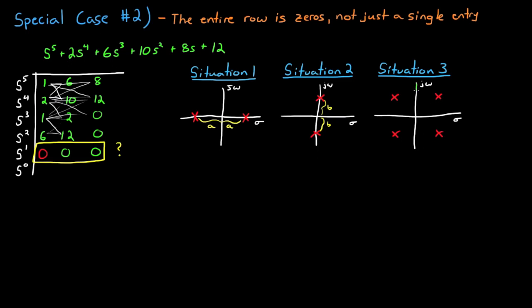You can see that in all three situations, they're just a reflection about both the real and the imaginary axis. Now here, the first and third root patterns both have roots in the right half plane and are therefore unstable.